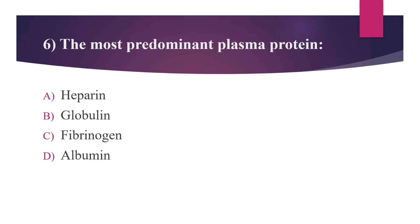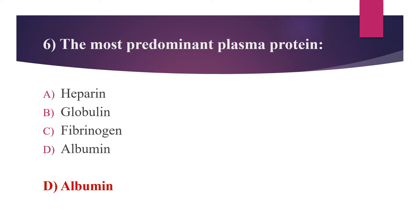Sixth question: the most predominant plasma protein. Option A: heparin. Option B: globulin. Option C: fibrinogen. Option D: albumin. The answer is option D, albumin. Fifty percent of all plasma protein is albumin. Albumin maintains osmotic pressure and also carries hormones, vitamins, and enzymes throughout the body.